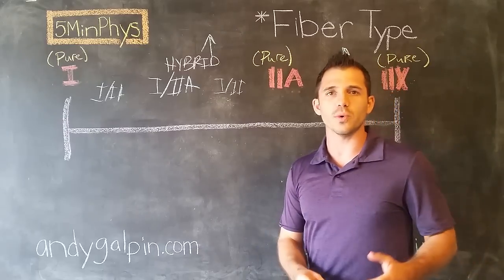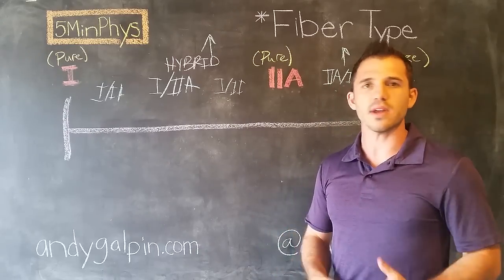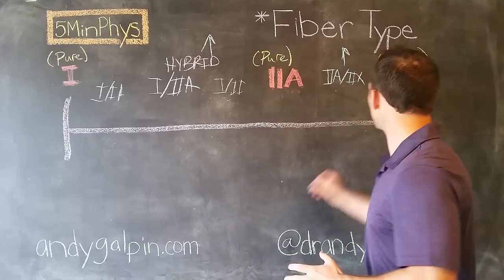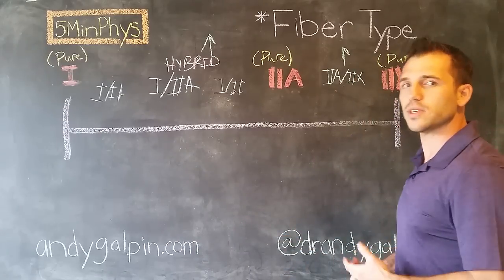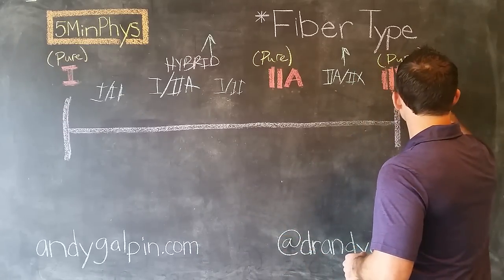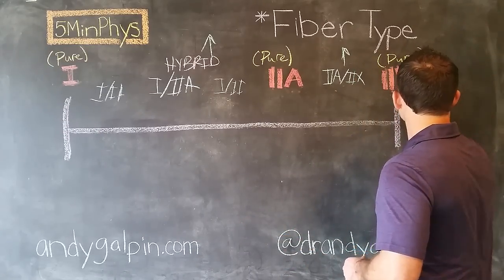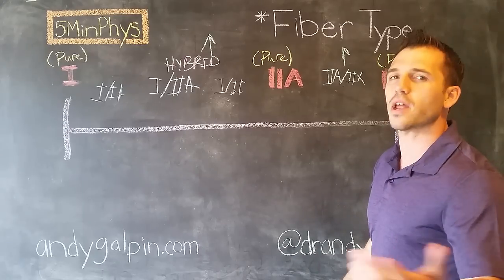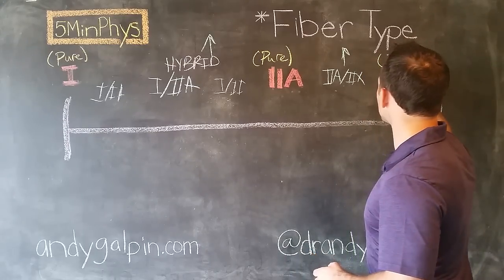Whether we're looking at young, old, men, women, strength trained, endurance trained, you name it, we don't ever see this. In fact, the percentage that we see in our lab is something like 0.1%, maybe less. This is one in every 1,000 individual fibers is a pure 2X.